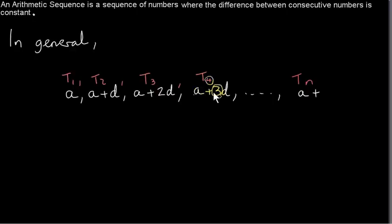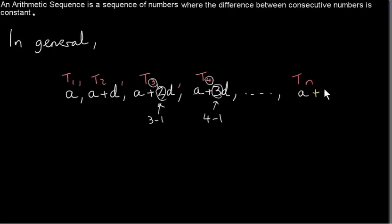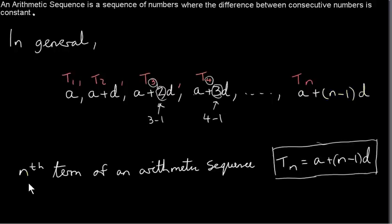We can see that the coefficient of d here is just 4 minus 1. Similarly, the coefficient of d is just the subscript minus 1. So in general, for TN, the coefficient is going to be the subscript minus 1. The subscript is N, we subtract 1, and we multiply by d — so we need brackets around this, of course. There are two terms here. So the nth term of an arithmetic sequence is TN equals a plus (N minus 1) times d.